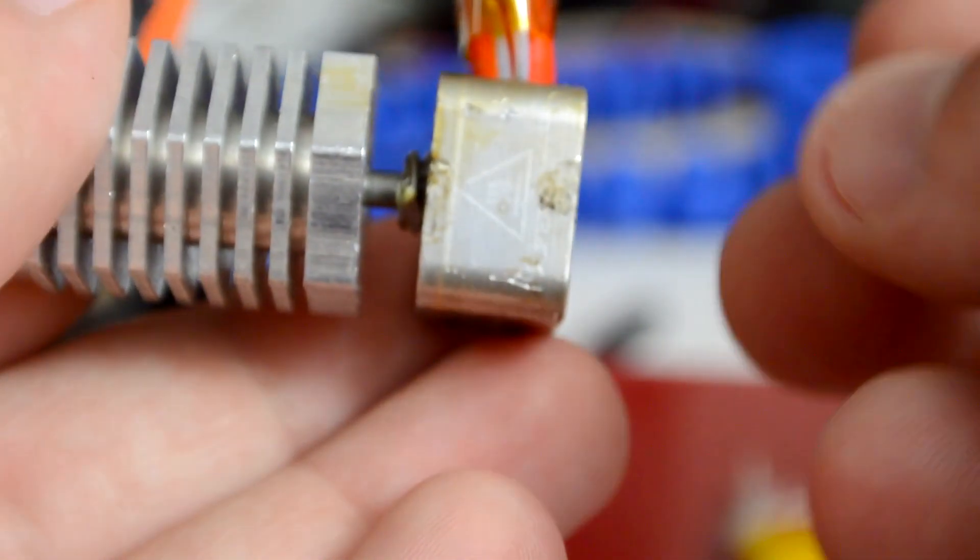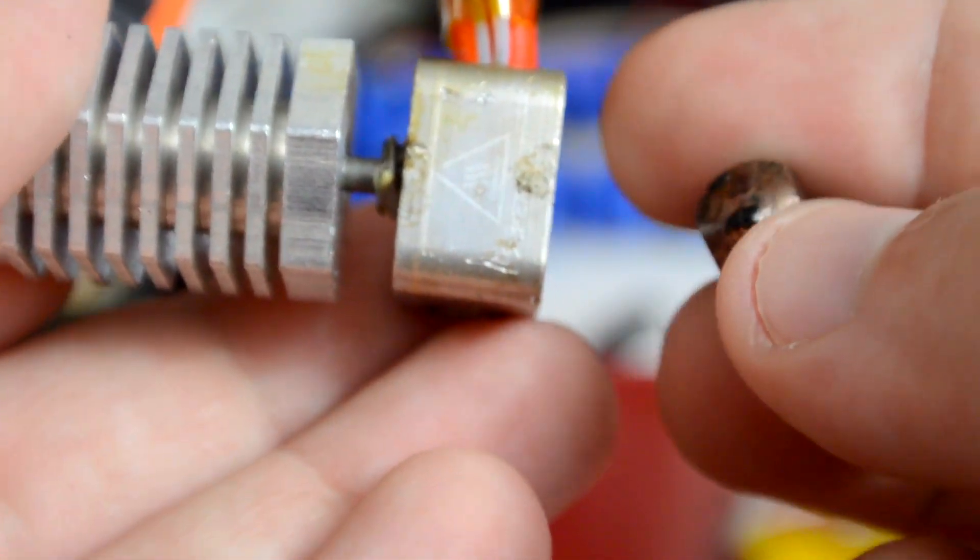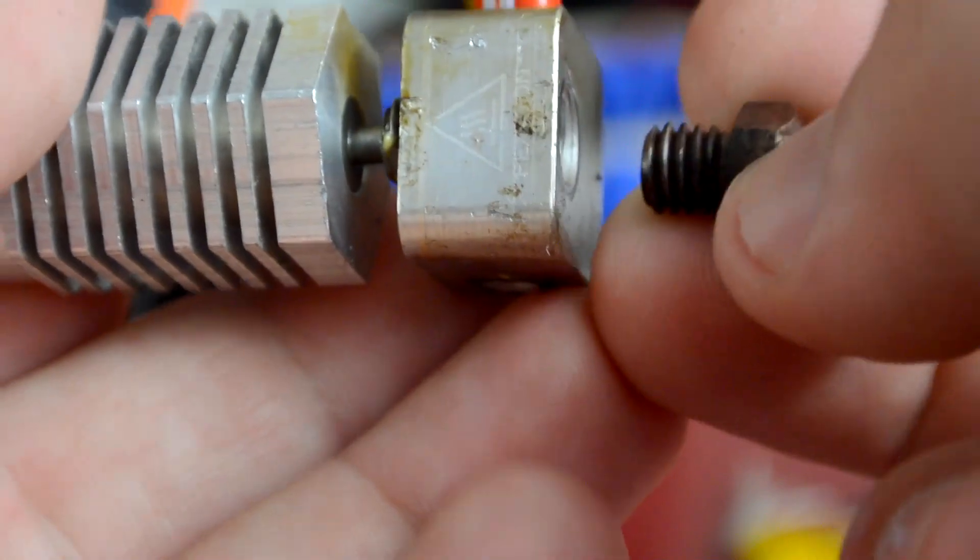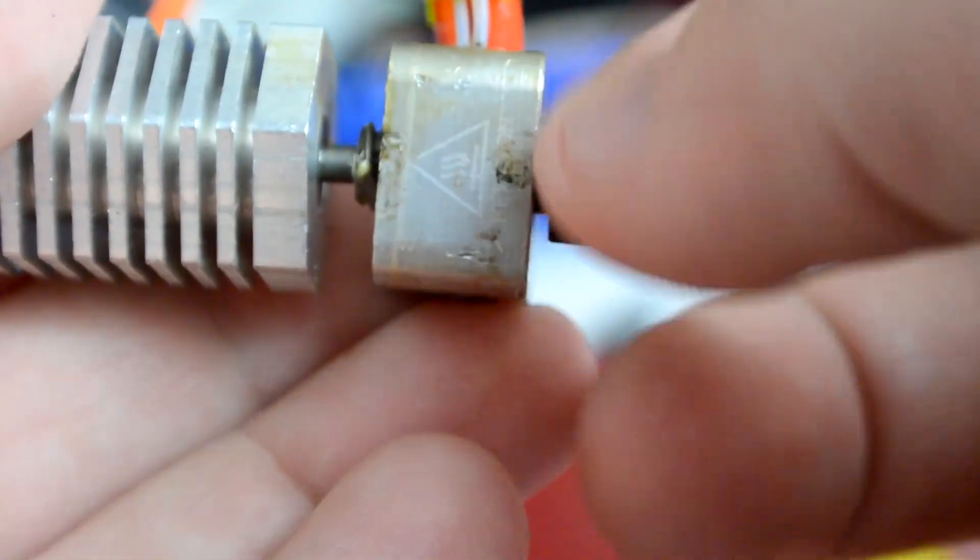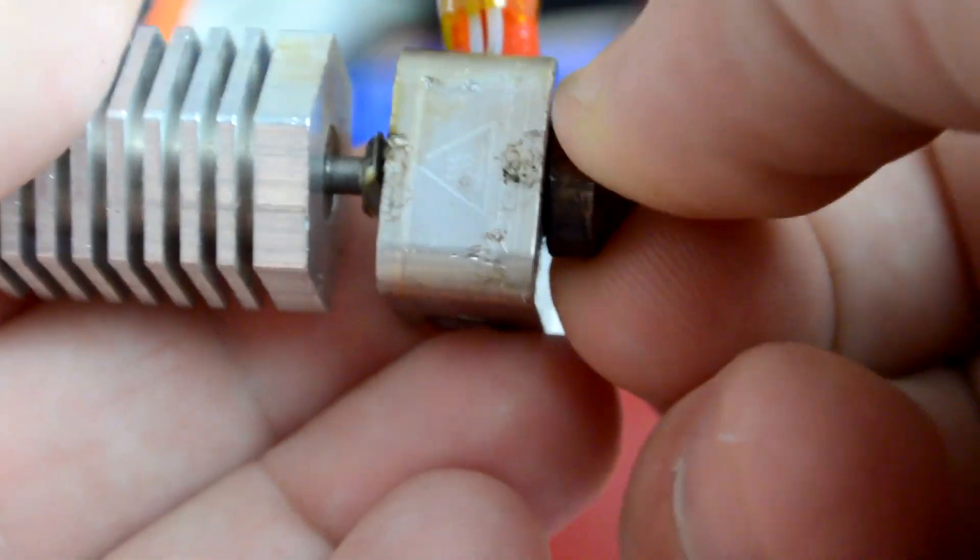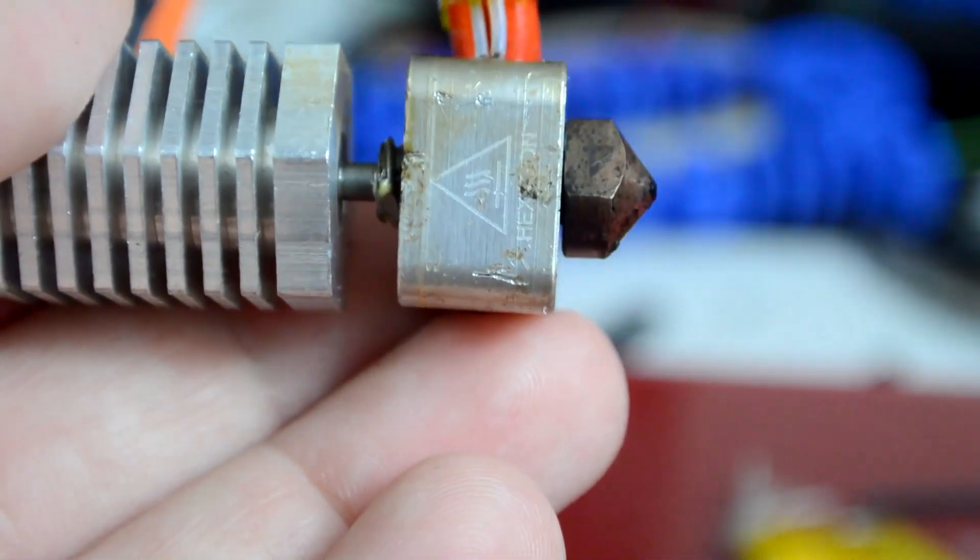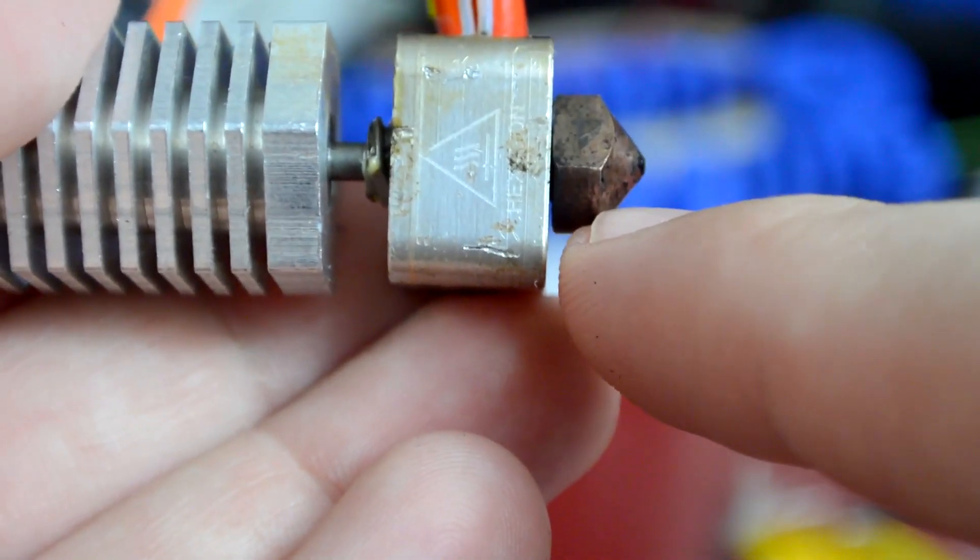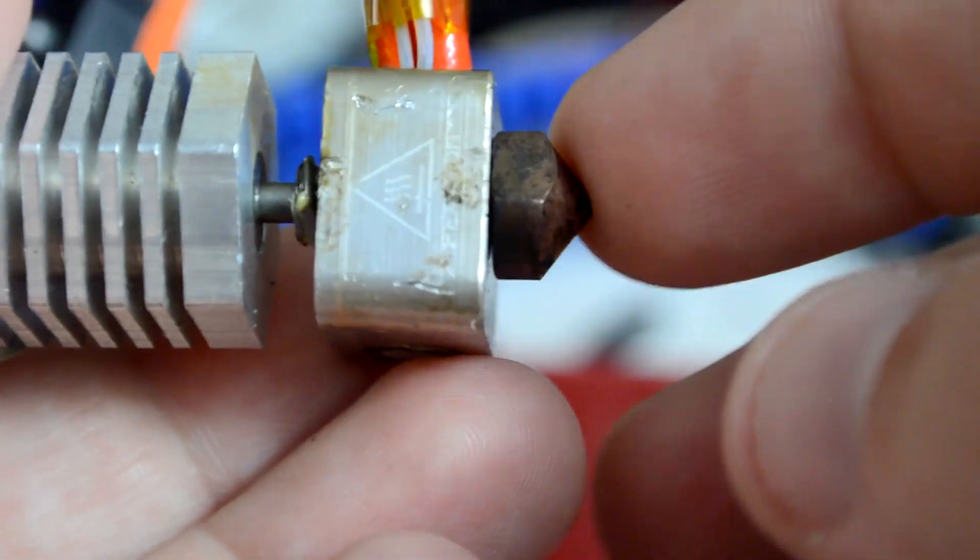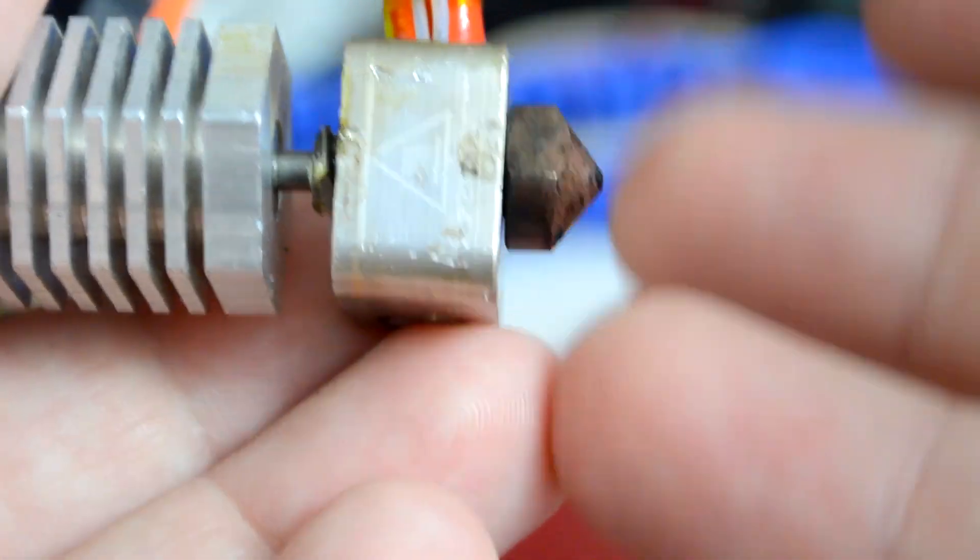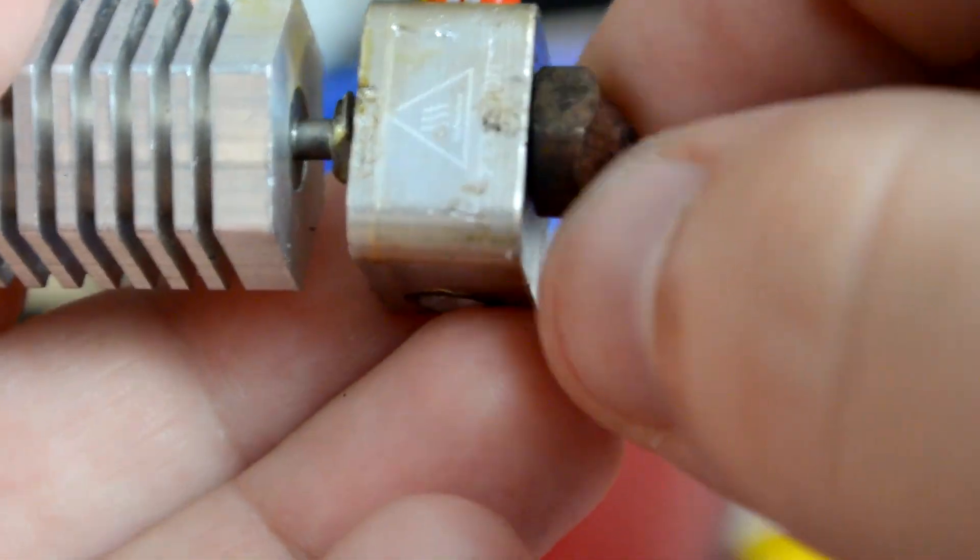So we're back at the printer and I have my freshly cleaned nozzle that hopefully is no longer clogged. So I'm going to start hand tightening this in and then we will turn on the hot ends and get this up to temperature before I really crank it down. And when you're assembling a hot end like this you always want to do it hotter than the hottest temperature that you're going to print with because when metal gets hot it expands.